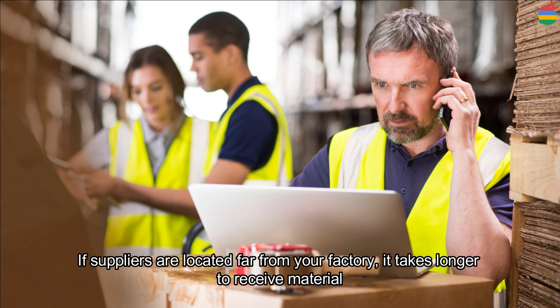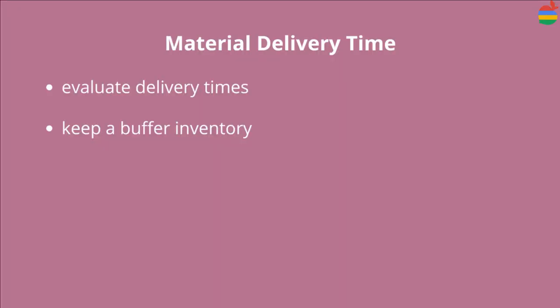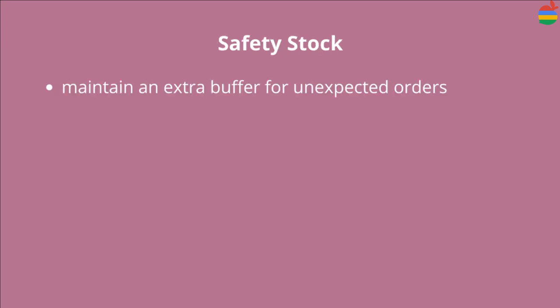A second type of inventory buffer is for material delivery time. If suppliers are located far from your factory, it takes longer to receive materials, so your factory must keep a buffer inventory of supplies and materials. This extra cost is usually offset by obtaining a lower price from your global supplier.